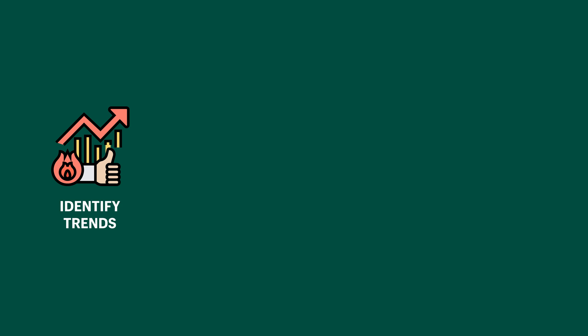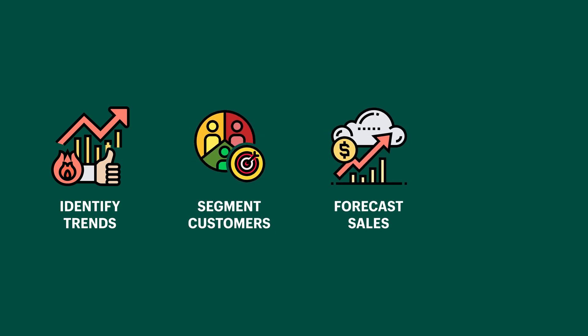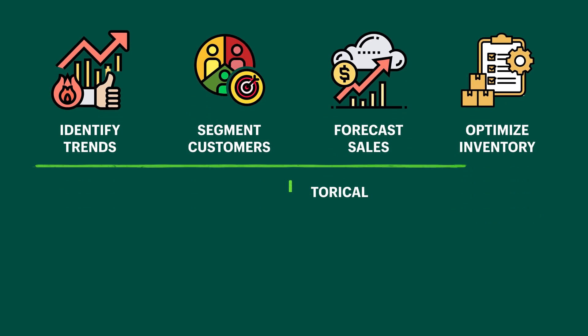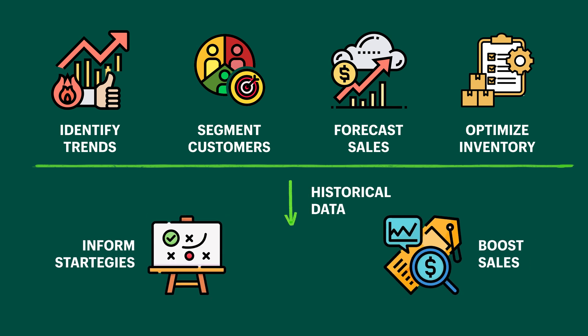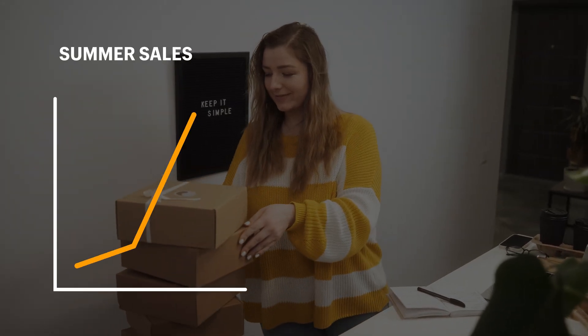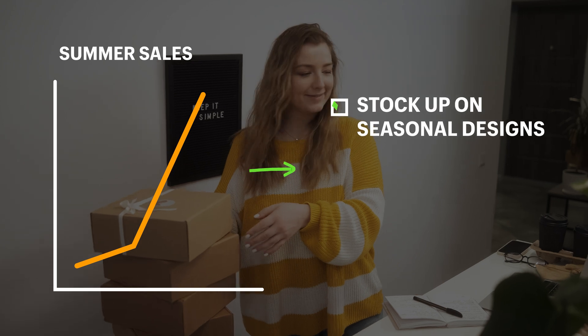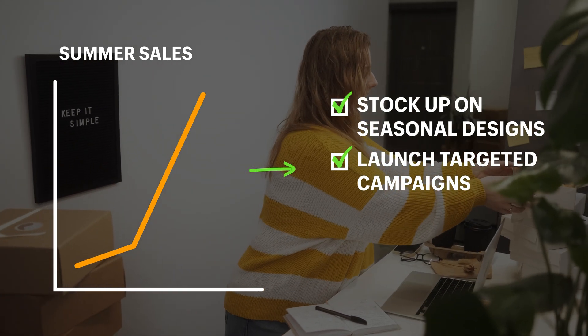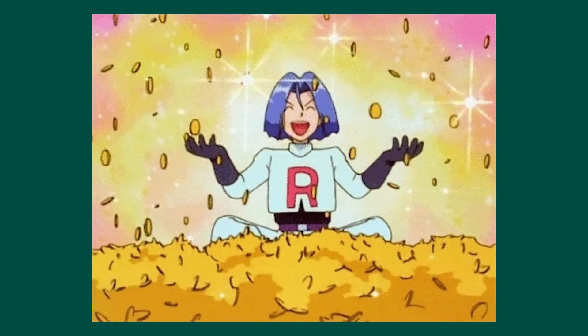ChatGPT isn't just about crunching past numbers — it's a powerful tool for making future predictions. By identifying trends, segmenting customers, forecasting sales, and optimizing inventory, you can use historical data to inform strategies and boost sales. For example, if your t-shirt business sees a spike in summer sales, you can stock up on seasonal designs, launch targeted campaigns, and offer early bird discounts. Make sure to leverage ChatGPT and Excel to not only understand your past but to shape a more profitable future.